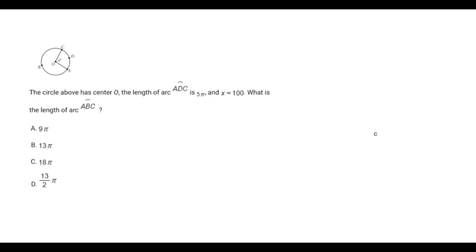The first thing we know is that the angle X is going to be corresponding with that arc ADC. So our angle X, we can just write this on top, would be 100. And so it's corresponding to arc ADC, which has a length of 5π.